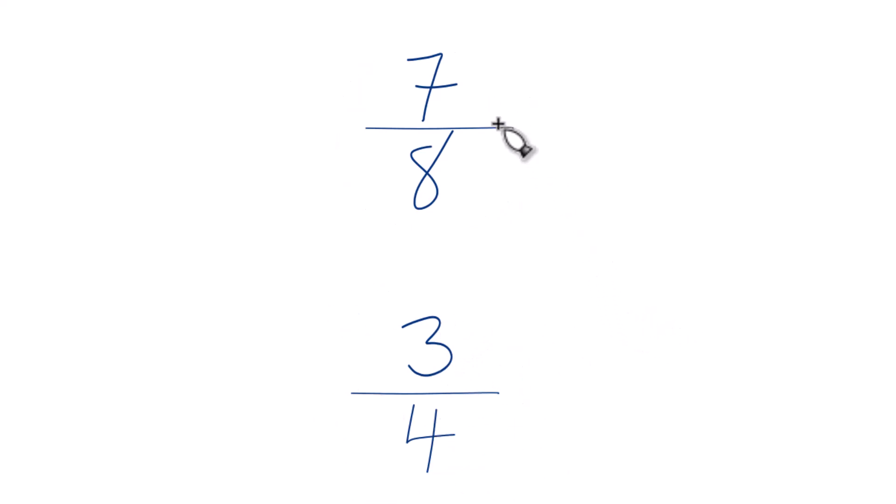The first thing you could do is you could just take your calculator, divide 7 by 8, and then divide 3 by 4 and compare the decimals. That's one way to do it.